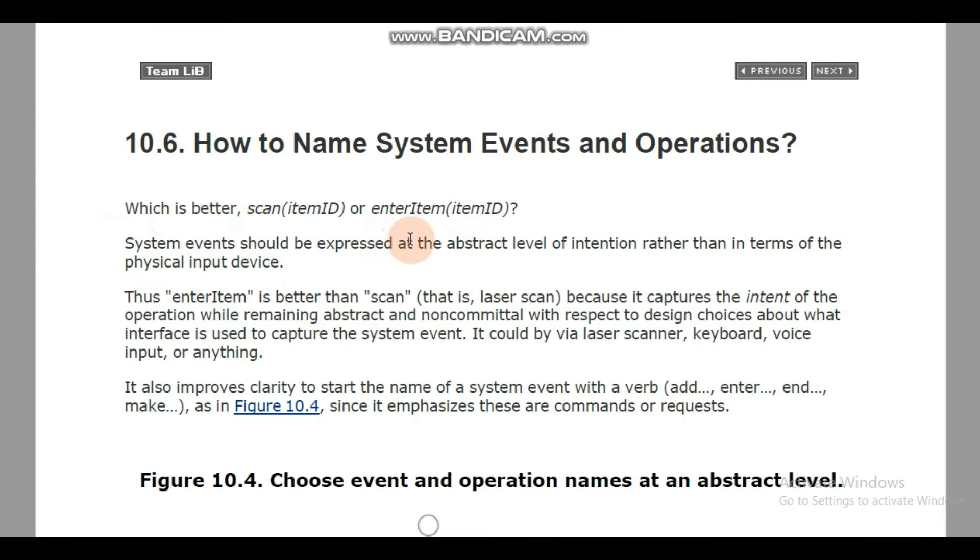When naming system events and operations, you have to express them at an abstract level of intention. You don't need to mention physical input devices. When you name system events or operations, you will not give the physical input device in mind, but at an abstract level you are entering details regarding some item, so you will keep it at the abstract level.